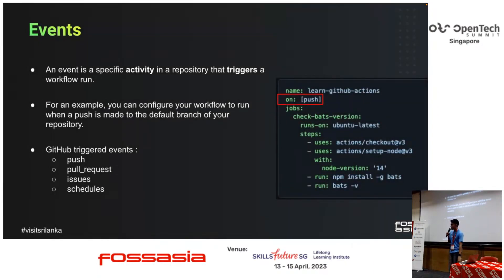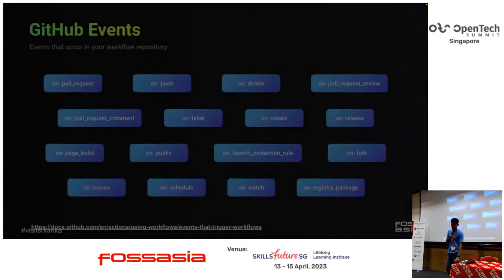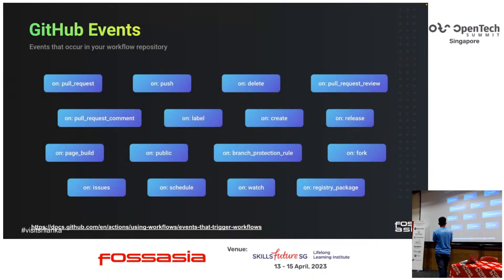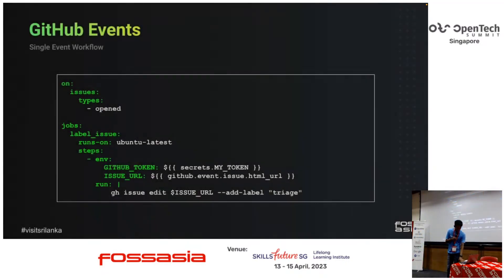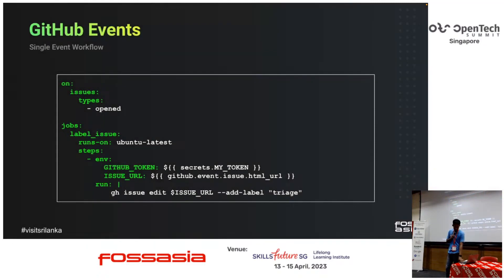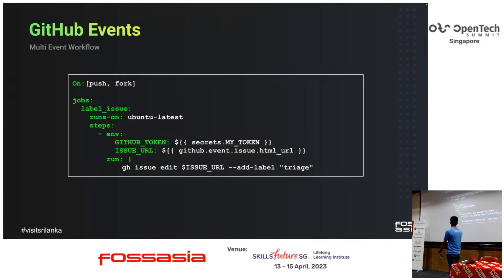Events — we have hundreds of events that can occur in a repository. There is a link where you can see more about what events can trigger in a GitHub repository. You can have a workflow that triggers based on someone pushing, someone making a fork, or you can even run cron jobs. There are two types of GitHub events. One is a single event — basically this event triggers when someone opens an issue in the repository, otherwise it won't. And you can have a multi-event workflow — these particular actions will run when someone pushes or when someone forks the repository.